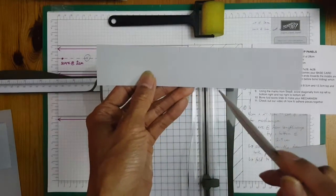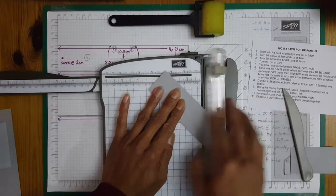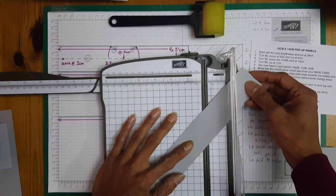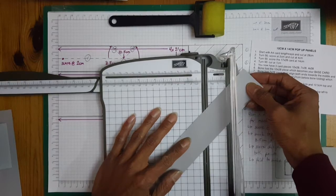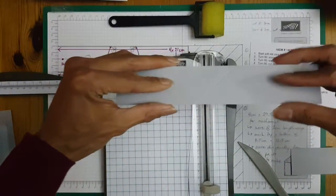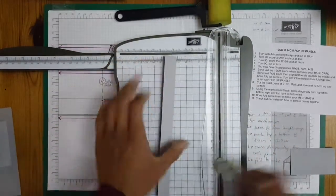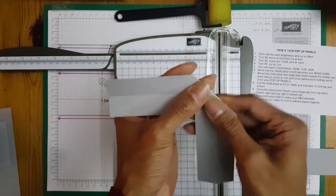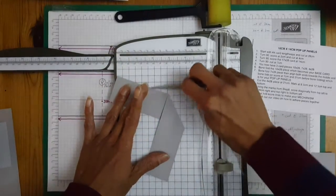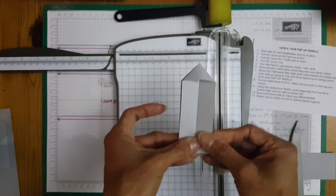We are now going to score diagonally, which we can use our trimmer just by aligning those two points. And then on the other side. With this one you fold inwards, so valley, and then mountain folds along the diagonal score lines. There we go. And then just pinch it in and turn it down and that will be your mechanism.